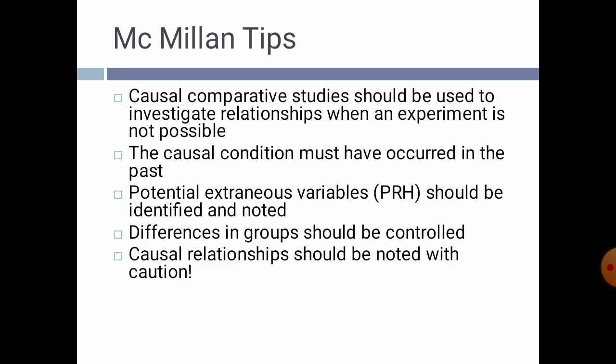McMillan's tips for causal comparative studies: use causal comparative studies to investigate relationships when an experiment is not possible; the causal condition must have occurred in the past; potential external variables should be identified and noted; differences in groups should be controlled; and causal relationships should be stated with caution. These are the tips if you want to use causal comparative or ex post facto research.